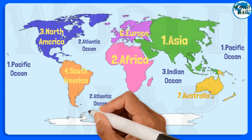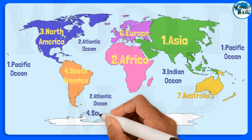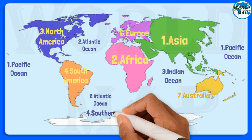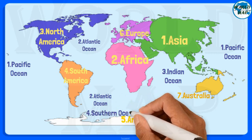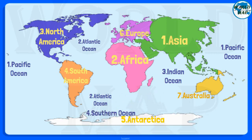Number 4: Southern Ocean. In 2000, the Southern Ocean became the newest ocean recognized by the International Hydrographic Organization. It borders Antarctica in its entirety.